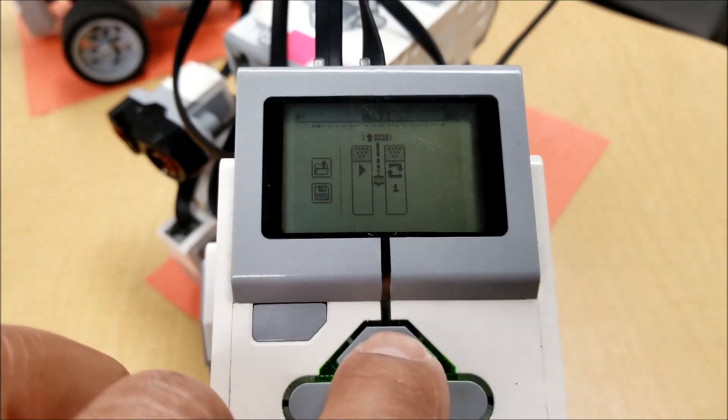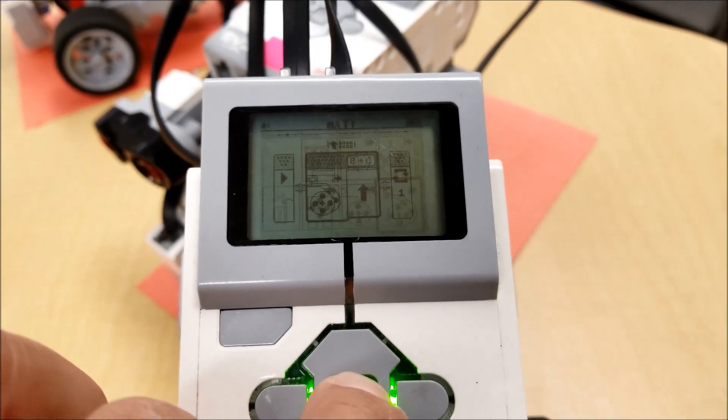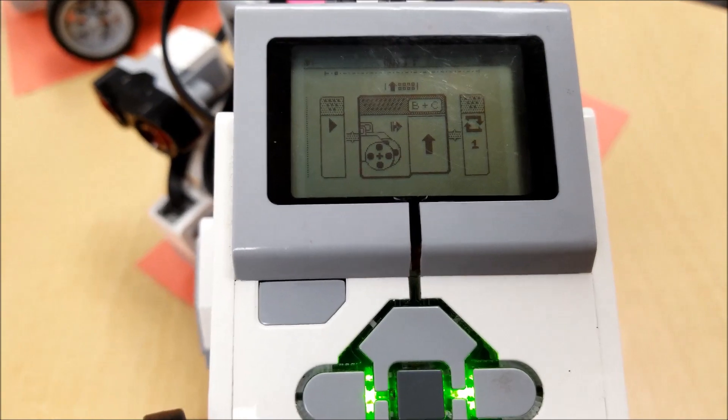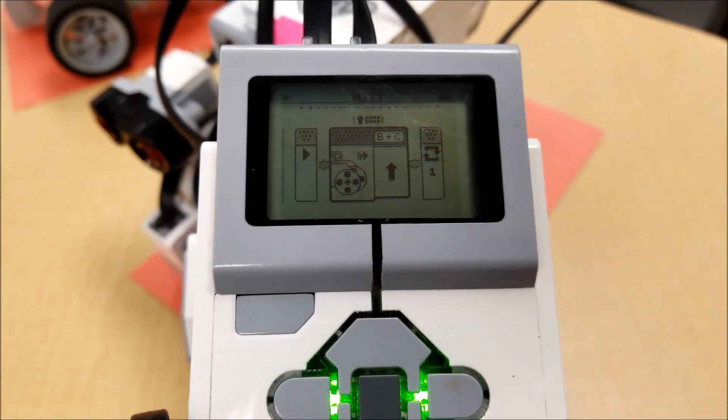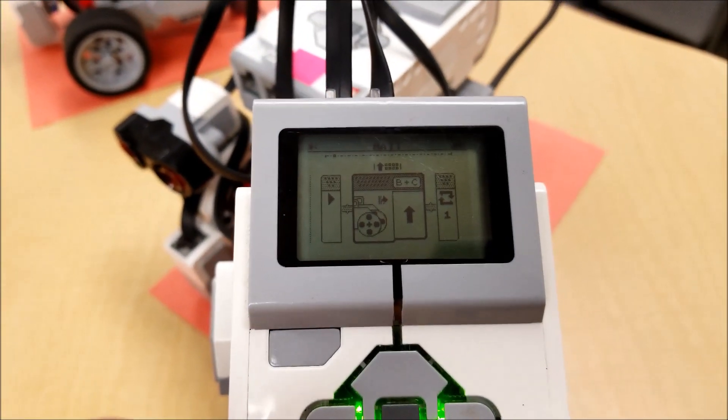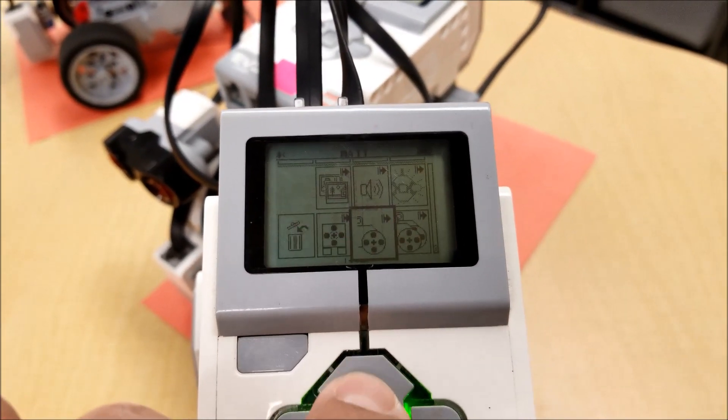So we're going to start with our first block, which is going to be just this move tank block. And we just want the robot to go forward until it sees blue.